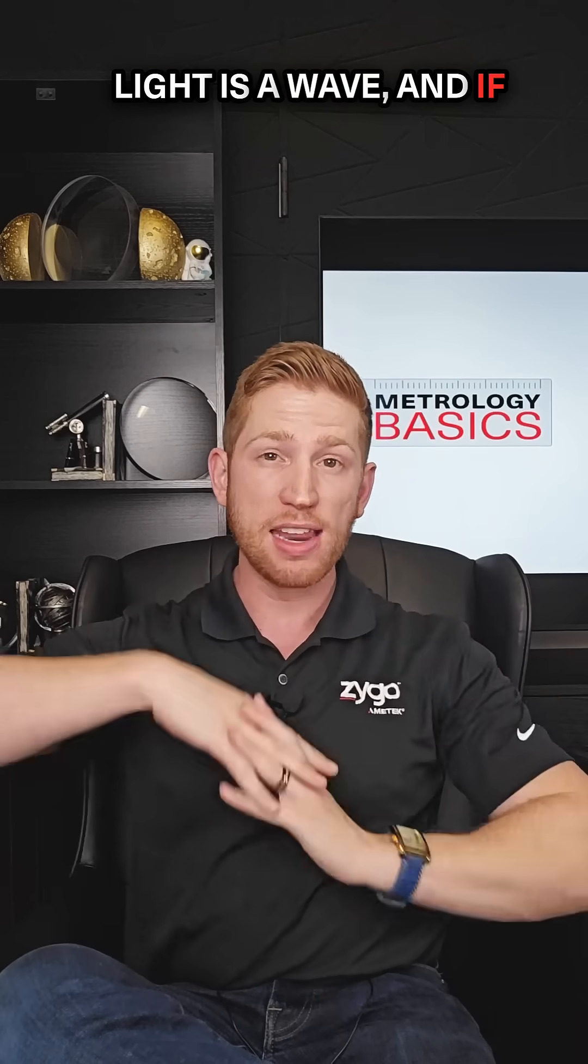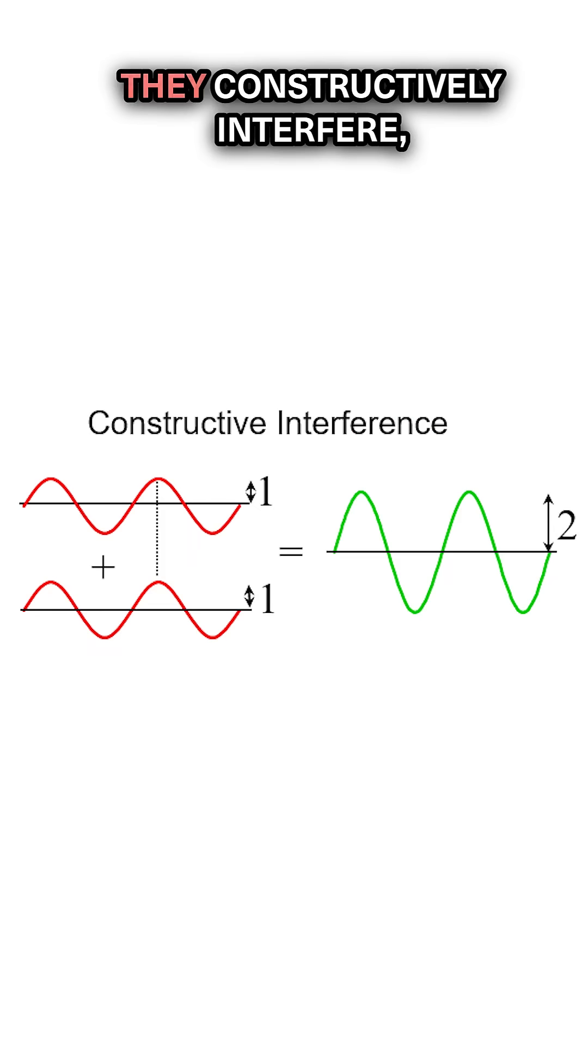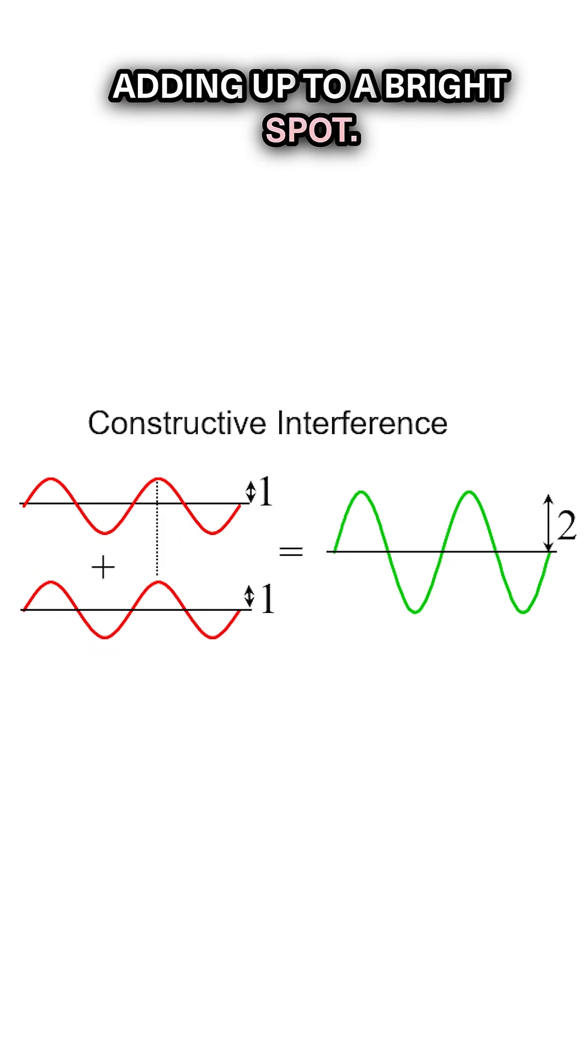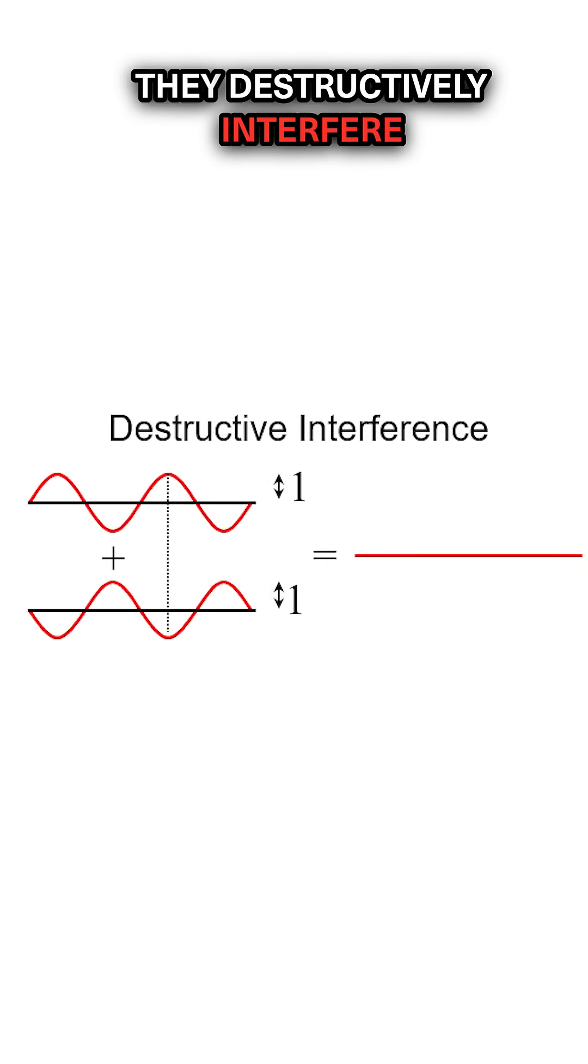Light is a wave, and if the high points of one wave line up with the high points of another, they constructively interfere, adding up to a bright spot. But if the high point of one lines up with the low point of another, they destructively interfere to a dark spot.